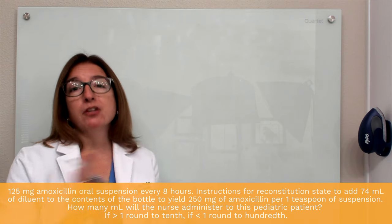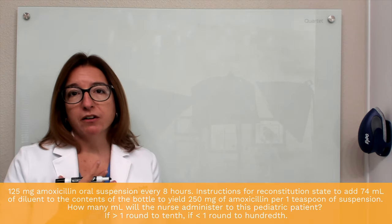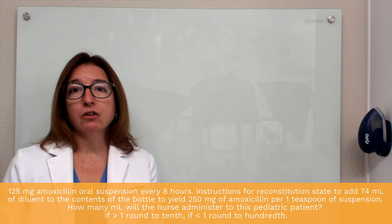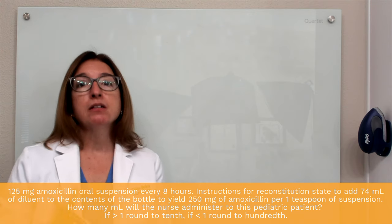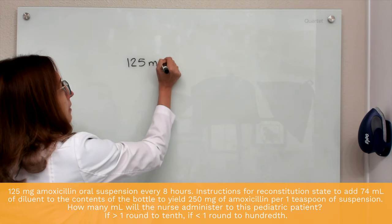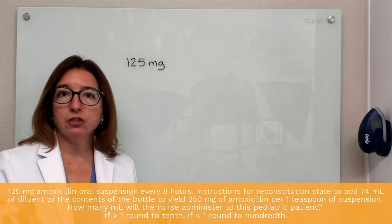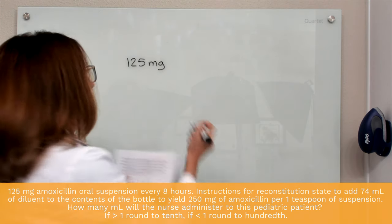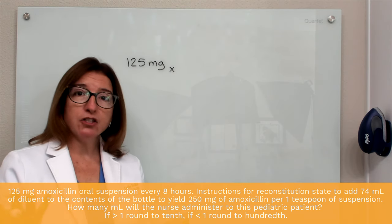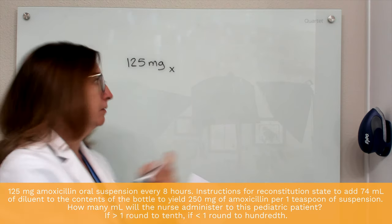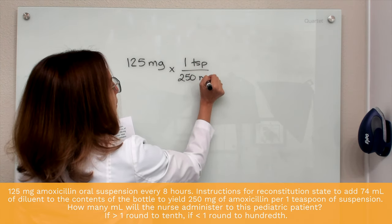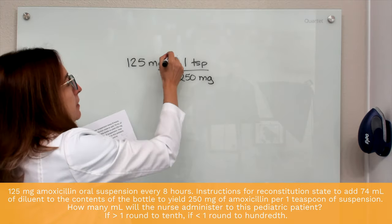I'm going to work through this using dimensional analysis, which is my preference because it's a little more straightforward and efficient. You can absolutely use ratio and proportion or the formula method as well to solve this problem. We first write down what is ordered, which is 125 milligrams — that's usually where you start with dimensional analysis. Then we multiply by what is available. The final concentration of our suspension is 250 milligrams in one teaspoon, so we write one teaspoon over 250 milligrams. You can see that our milligrams cancel out.